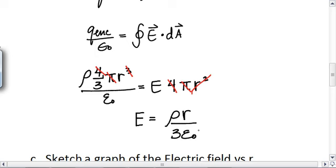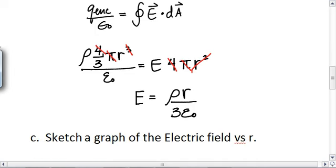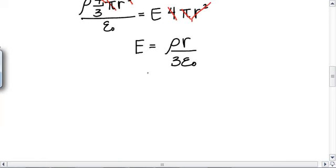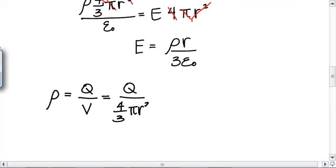Yay! Now, if we have to solve in terms of Q, then we need to make the substitution. Okay, so if we had to solve in terms of Q, and rho is equal to total Q over V. So that would be Q over four thirds pi R cubed, right? Almost messed up.